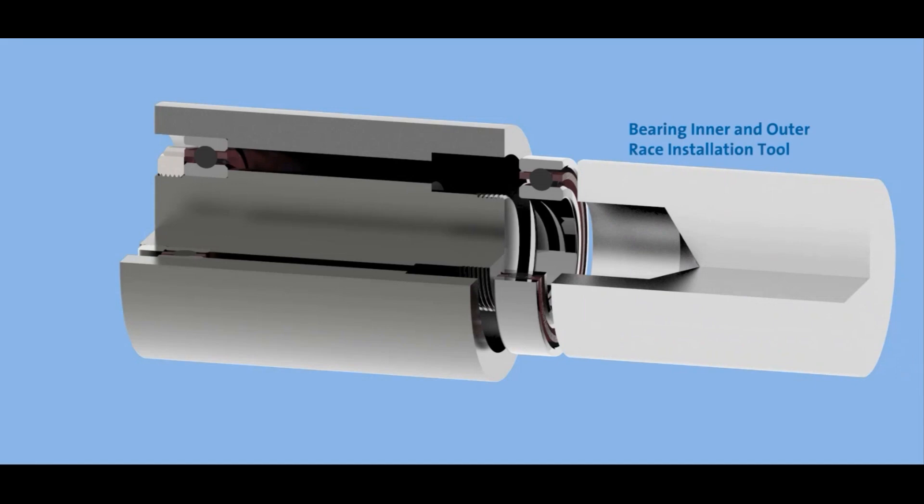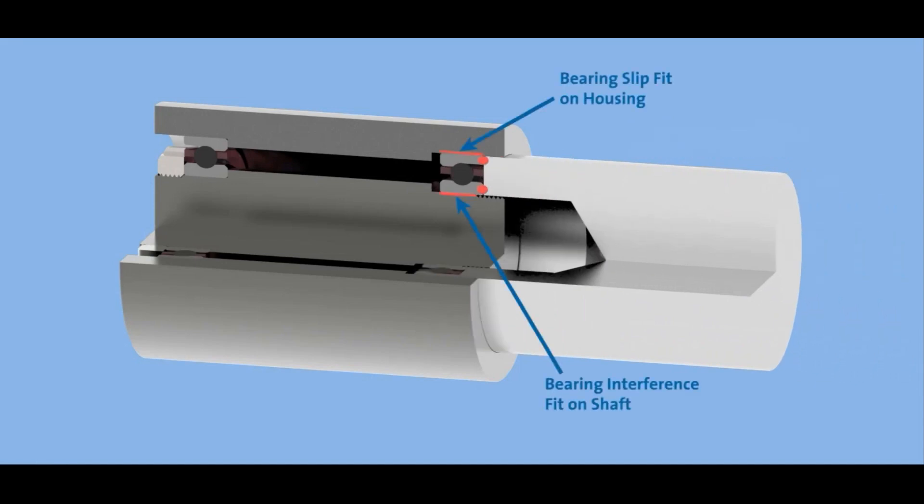And then on the right side, you can use a similar installation tool, again, that pushes on both the inner and outer ring. Use a smooth constant motion until that bearing is fully seated so that no load, again, is being transferred through those balls.